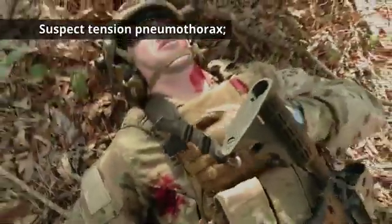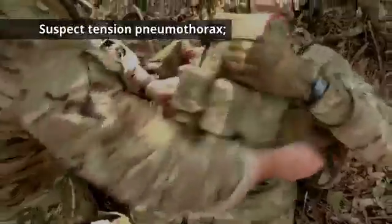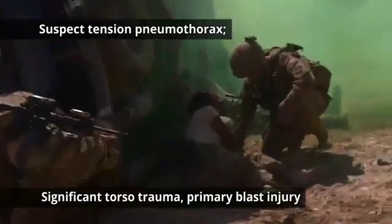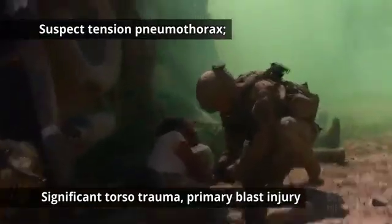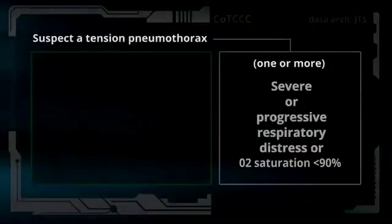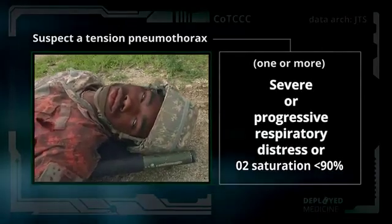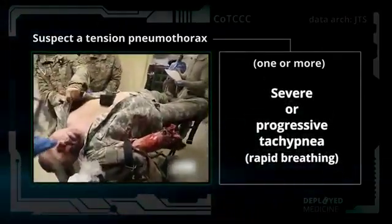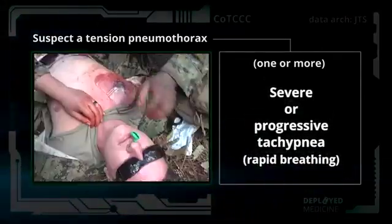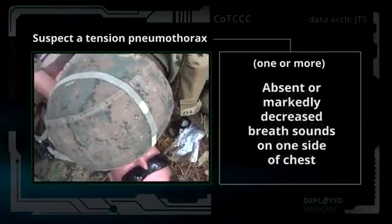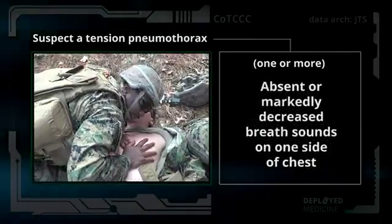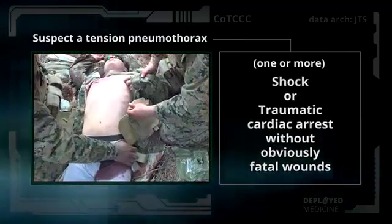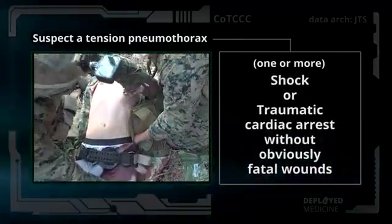Suspect a tension pneumothorax and treat when a casualty has significant torso trauma or primary blast injury and one or more of the following: severe or progressive respiratory distress, severe or progressive tachypnea, absent or markedly decreased breath sounds on one side of the chest, or shock or traumatic cardiac arrest without obviously fatal wounds.